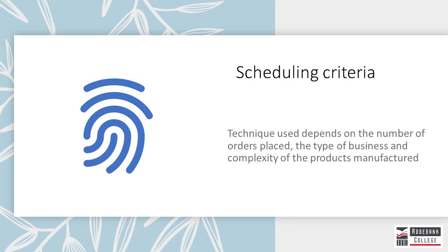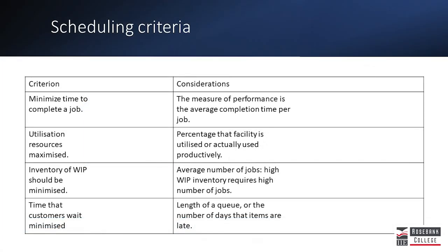Scheduling done correctly offers a competitive advantage for an organization because it makes deliveries dependable. Ensuring that the correct scheduling techniques are used is very important. The techniques employed depend on the number of orders placed, the type of business, and the complexity of the products manufactured. The table provided here shows the scheduling criteria that the schedule should meet and the factors that need to be taken into consideration.